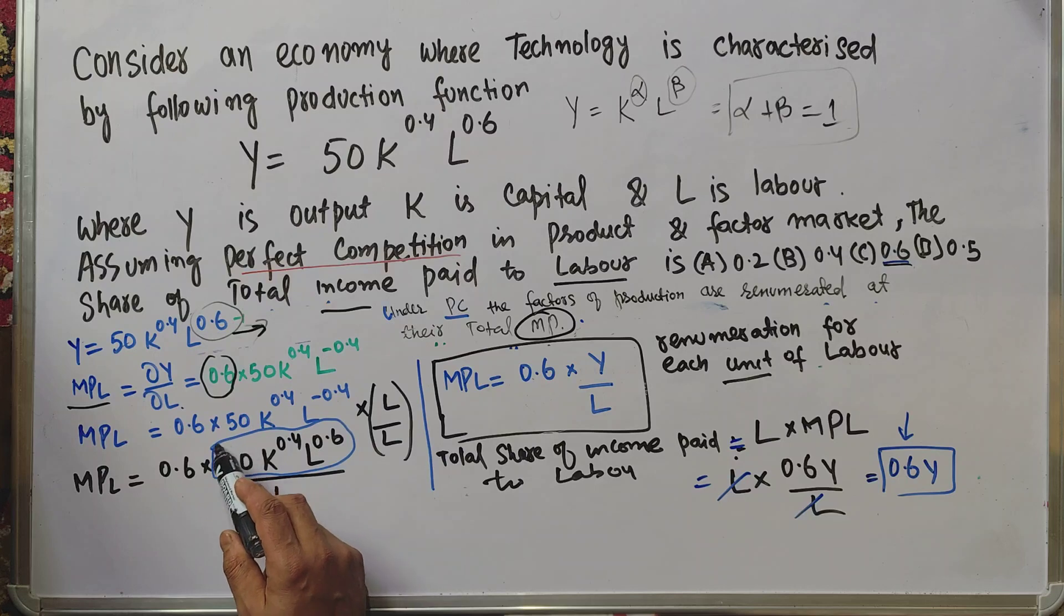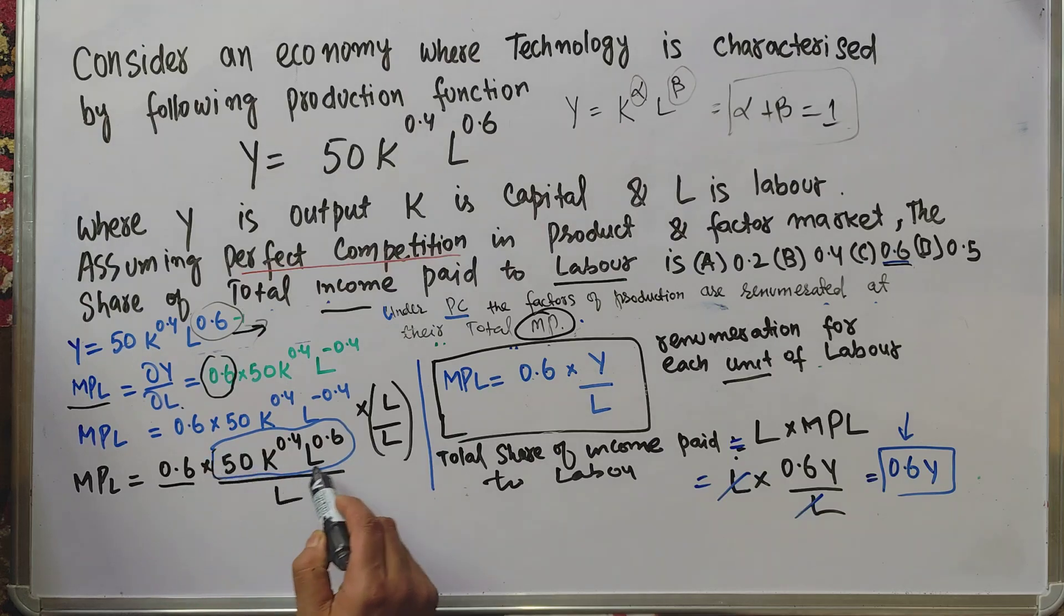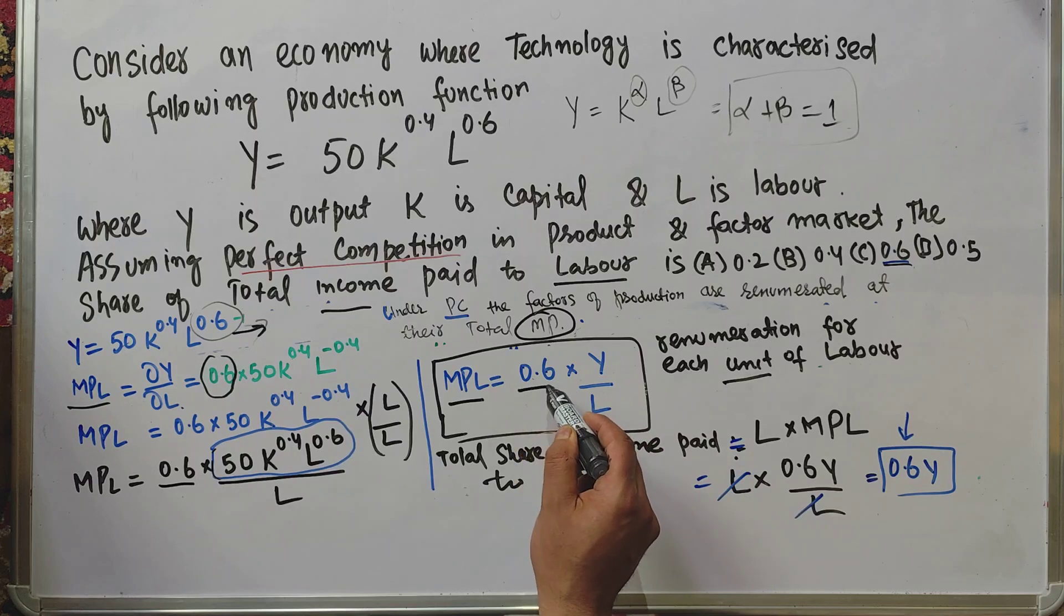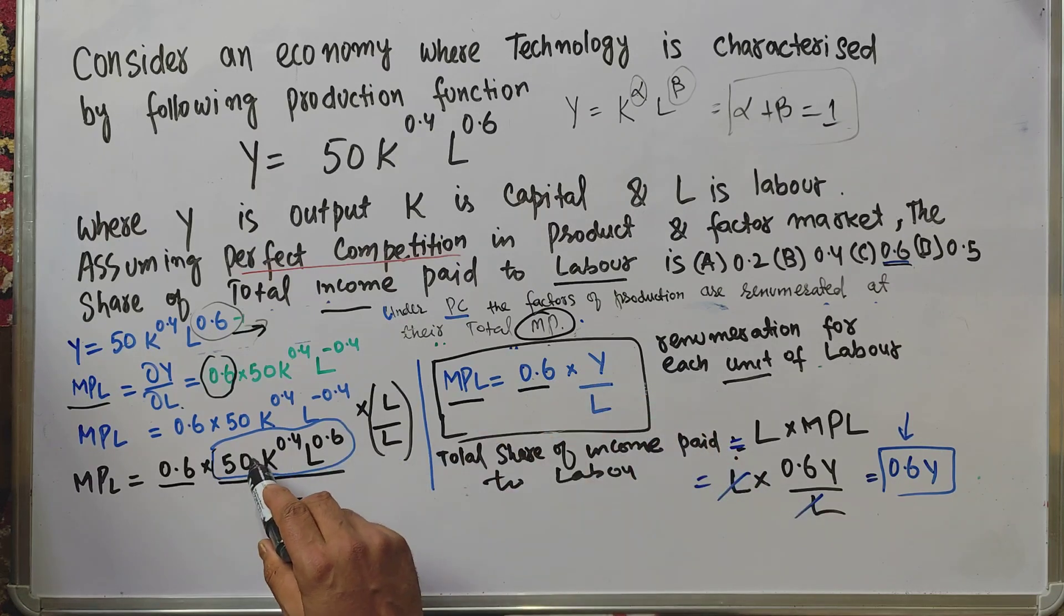Now MPL equals 0.6 times the original production function divided by L. That is, MPL = 0.6 × Y/L, where this expression denotes our original production function.